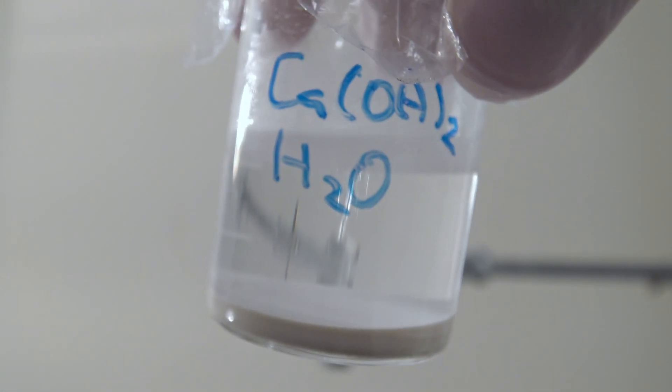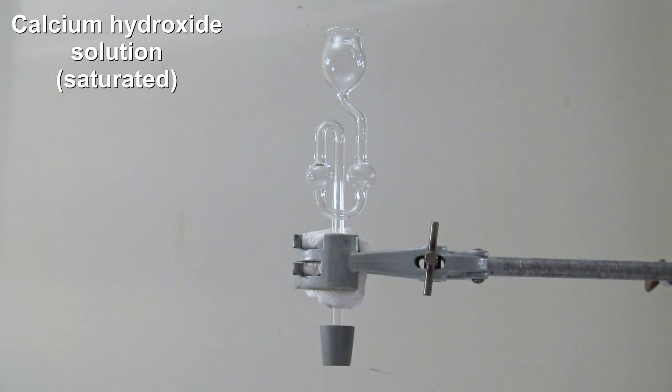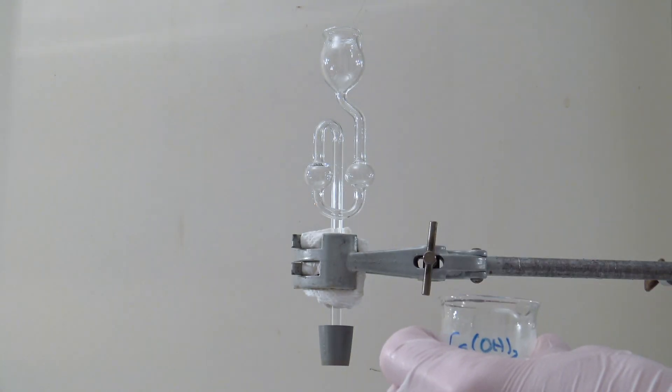For the test, saturated calcium hydroxide solution is filled into a fermentation tube. Barium hydroxide could be used instead.